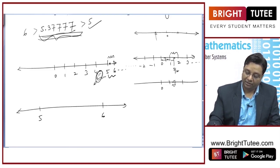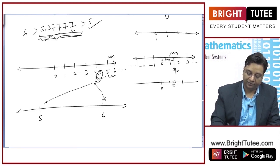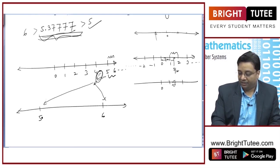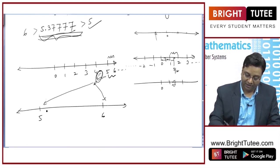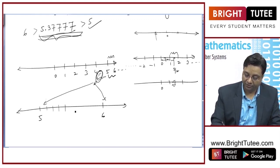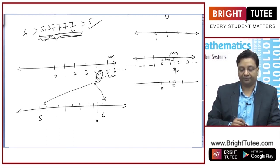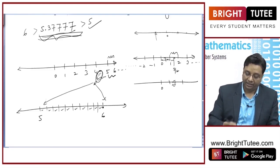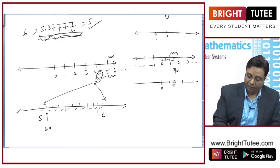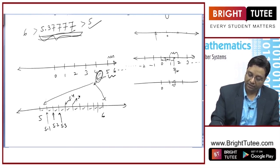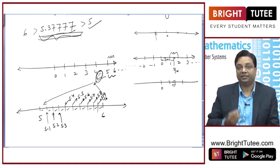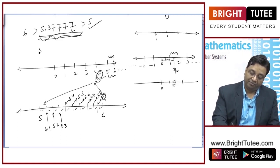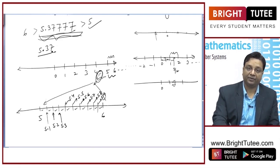Now I will divide the gap between 5 and 6 into 10 equal parts: 1, 2, 3, 4, 5, 6, 7, 8, 9, and 10. The first mark gives me 5.1, then 5.2, 5.3, 5.4, and similarly 5.5, 5.6, 5.7, 5.8, 5.9, and then 6.